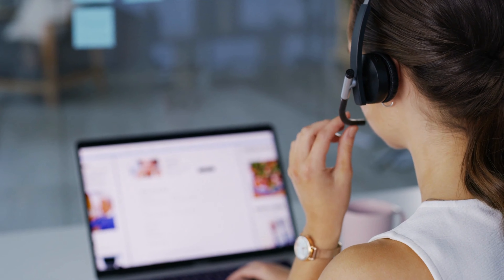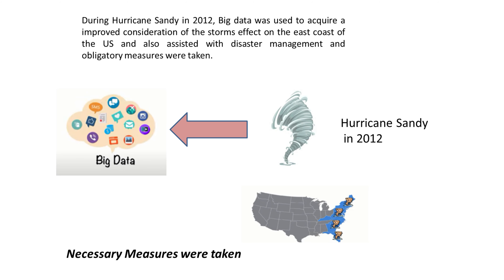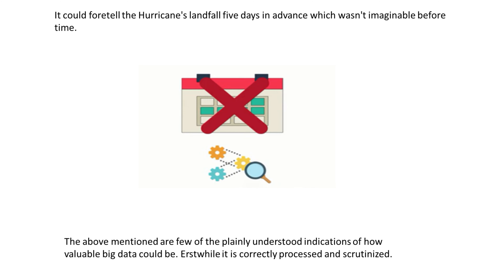During Hurricane Sandy in 2012, big data was used to gain better understanding of the storm's effect on the east coast of the U.S., and also assisted in disaster management where necessary measures were taken. It could predict the hurricane's landfall five days in advance, which was unimaginable before that time.